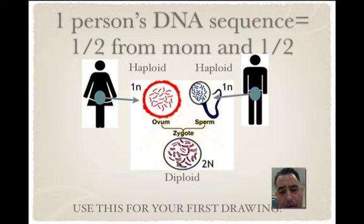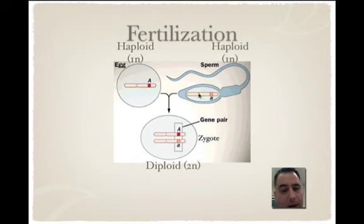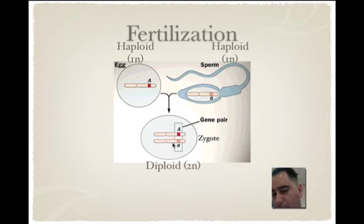Use this for your first drawing. Here's another example: an egg carrying a chromosome and the sperm carrying another chromosome. They're haploid — one of each. But when they come together, you have two of that kind — two of each — so that's diploid.